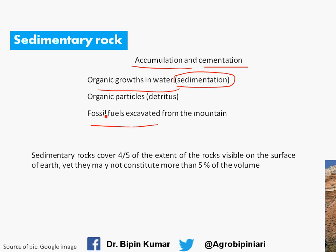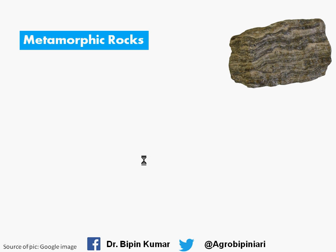The earth's crust is covered by about four-fifths in extent by sedimentary rocks — most of what we see on the earth's surface is made up of sedimentary rocks. However, if we compare on a volume basis, sedimentary rocks may be just five percent. So on the basis of coverage it has a very wide extent, but on a volume basis it is much smaller.